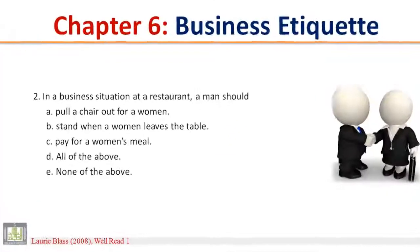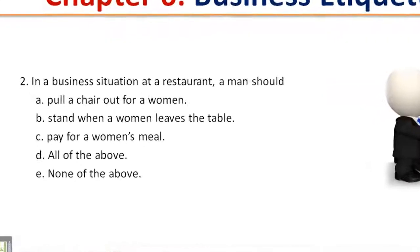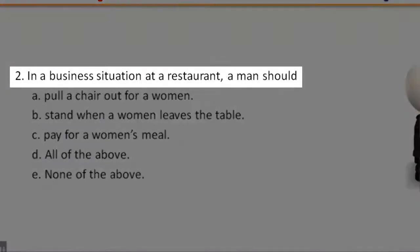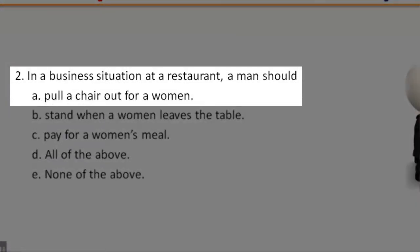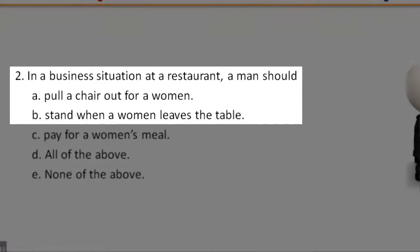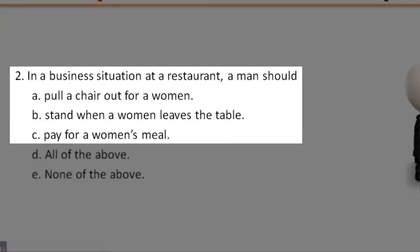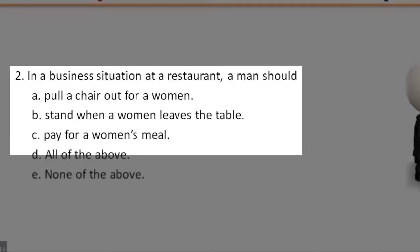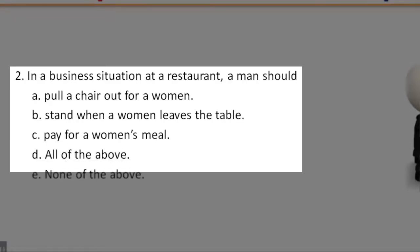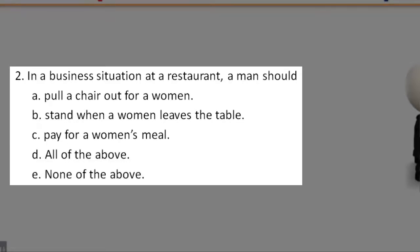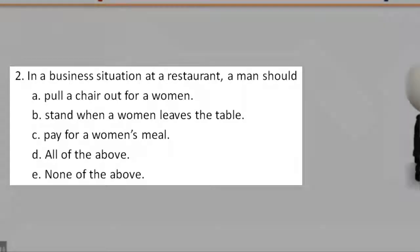2. In a business situation at a restaurant, a man should: A. Pull a chair out for a woman. B. Stand when a woman leaves the table. C. Pay for a woman's meal. D. All of the above. E. None of the above.